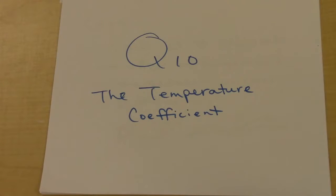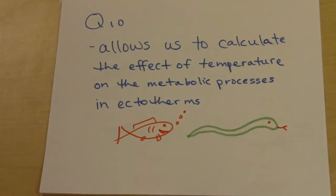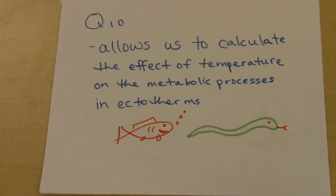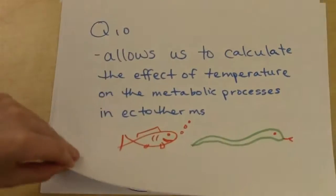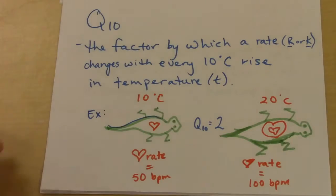In this video we are going to look at how to calculate and use Q10, the temperature coefficient. What Q10 does functionally on the AP exam is it's going to allow us to calculate the effect of temperature on metabolic processes. The examples they give are always ectotherms — metabolic processes in ectotherms like goldfish, snake, lizards, or daphnia. The official definition of Q10 is the factor by which a rate changes with every 10 degree rise in temperature.